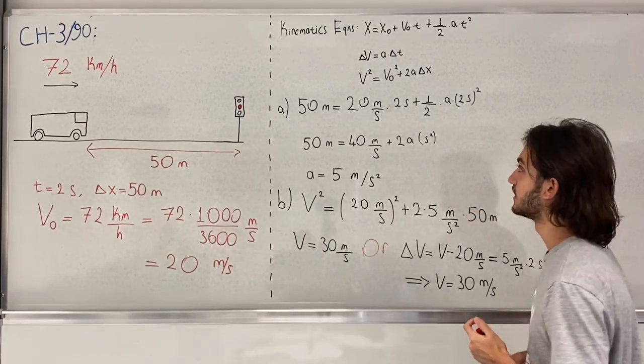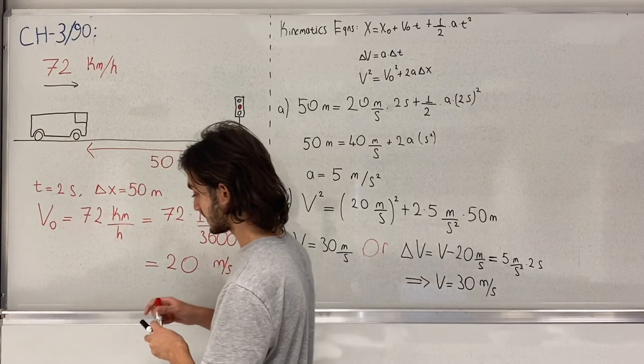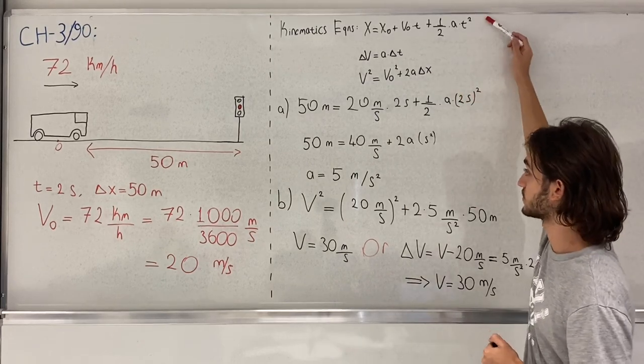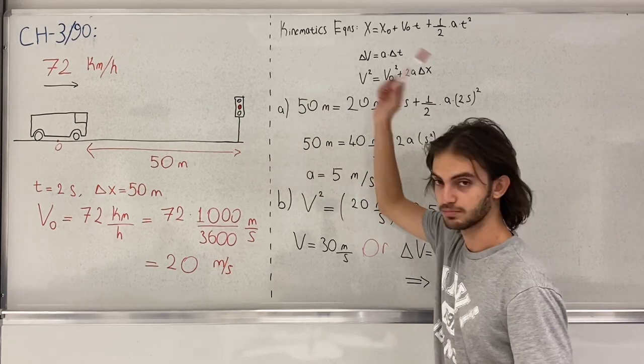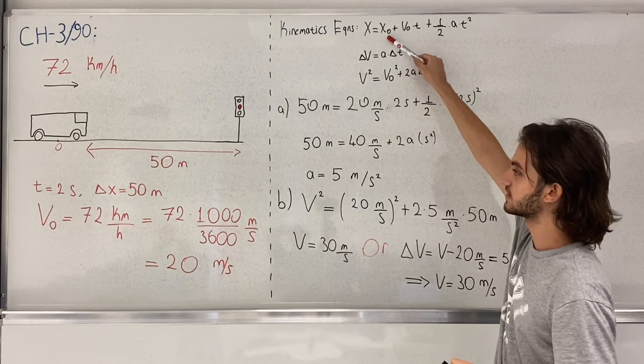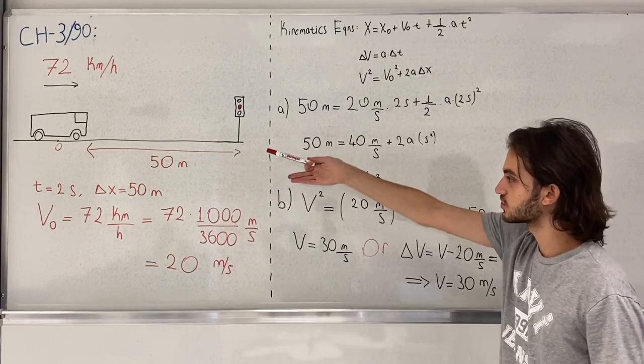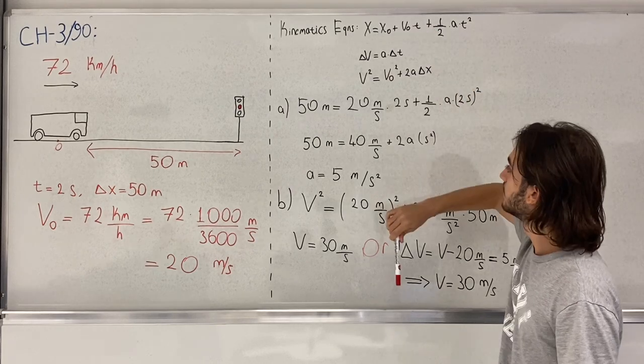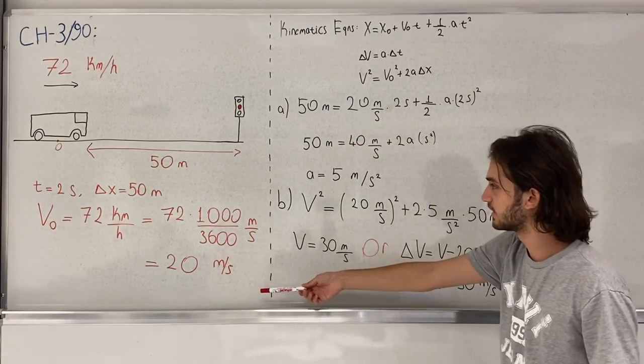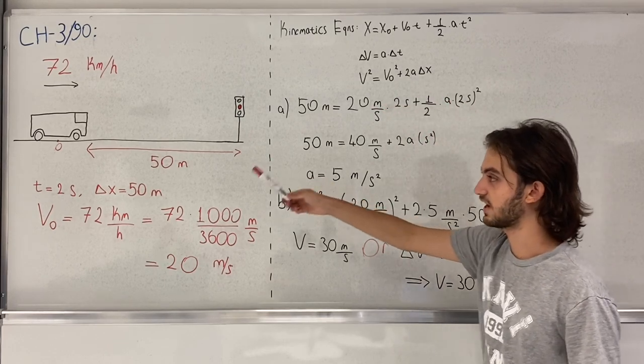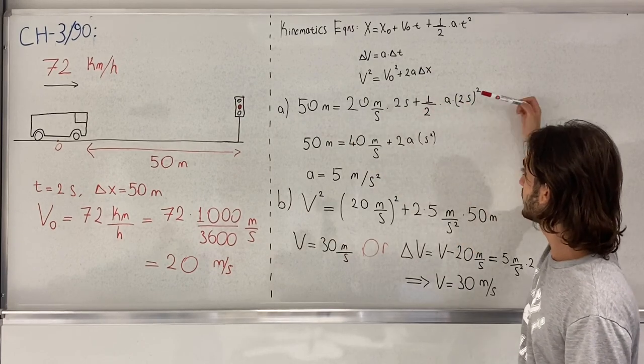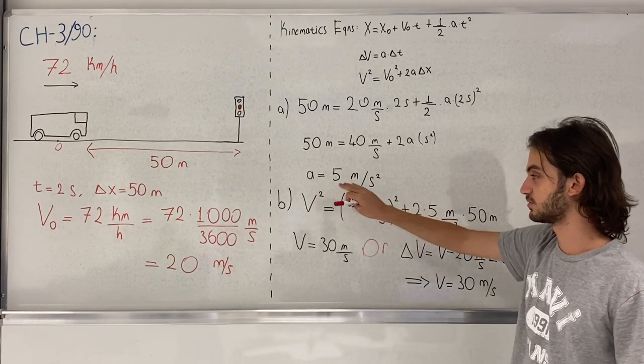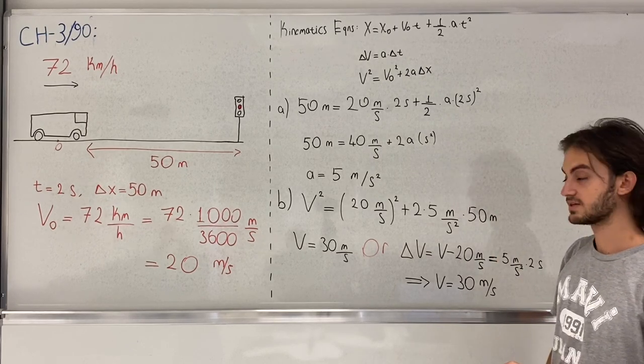We start calculating by letting this point be our origin. I'm writing the kinematics equation: we have our light at 50 meters in the positive x direction. X equals x₀, which is zero meters, plus initial speed times t, which is 20 meters per second times 2 seconds, plus one half a times 2 seconds squared. Through the calculations we get an acceleration of 5 meters per second squared in the positive x direction, and that is the end of part A.